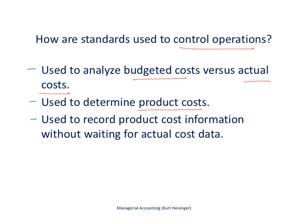We establish standards in advance so that we can determine our product costs without waiting for actual cost data. We can use standard information, and at the end of the year, month, or quarter, we can look at whether our budgeted and standard costs were close to the actual costs. In the meantime, we can still use those standard costs to make estimates on what it will cost to produce our products.